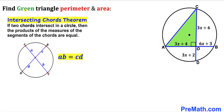Let's recall the intersecting chords theorem. According to this theorem, if two chords intersect in a circle, then the product of the measures of the segments of the chords are equal. So if two chords AC and BD intersect each other, then A times B equals C times D.